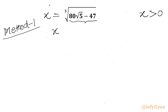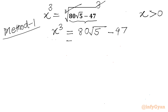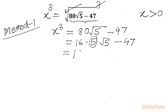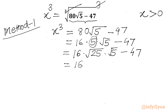Let us consider cubing both sides. The cube root and cube cancel, so we get x³ = 80√5 − 47. Now I can factor 80 as 16 times 5, and write this as 16 times √25 times √5 minus 47. So we get 16 times 25 times √5 = √(16·25·5) = √2000, giving x³ = √2000 − 47, or equivalently 16√125 − 47.